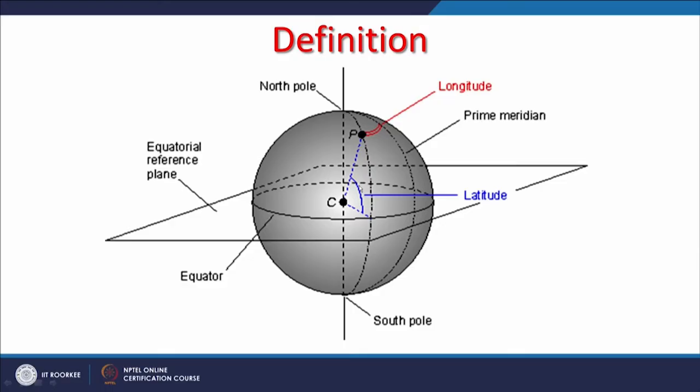If a point is located here, because of this angle we will have both a latitude and a longitude. The prime meridian is shown here, along with the equatorial reference plane, the north pole, and the south pole. Any point on the globe can be defined using longitude and latitude values, and because both are angular values, we measure them in degrees, minutes, and seconds.